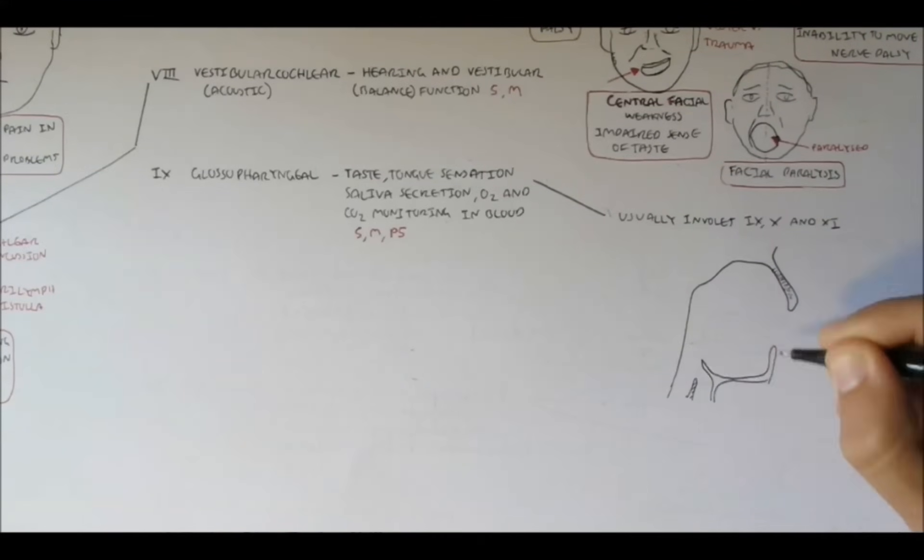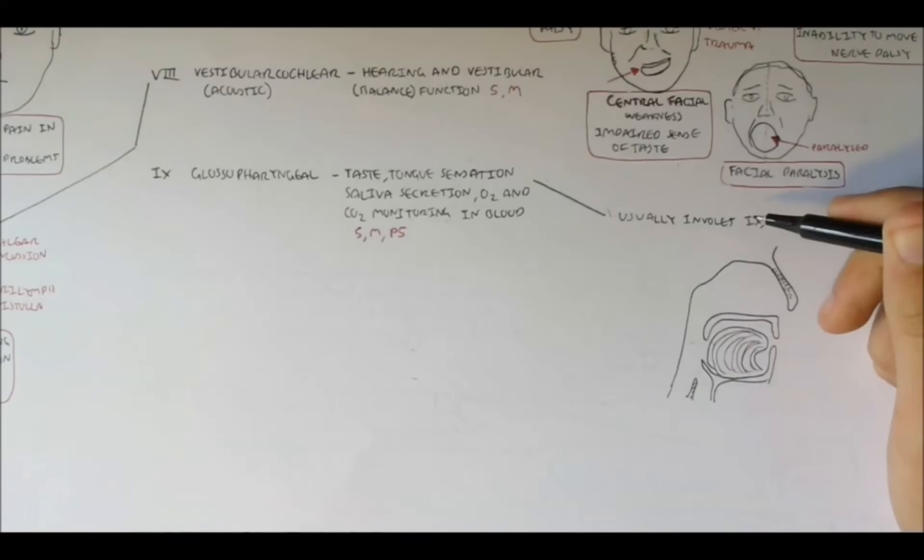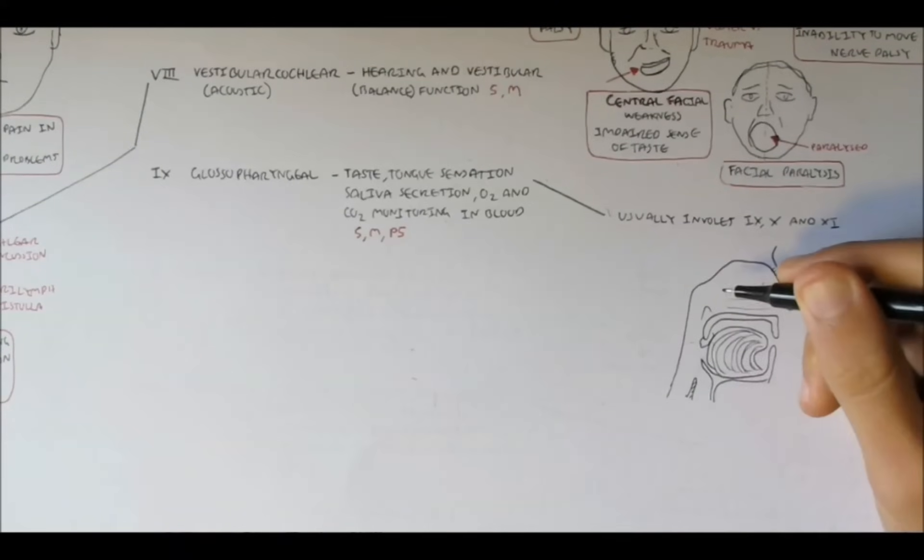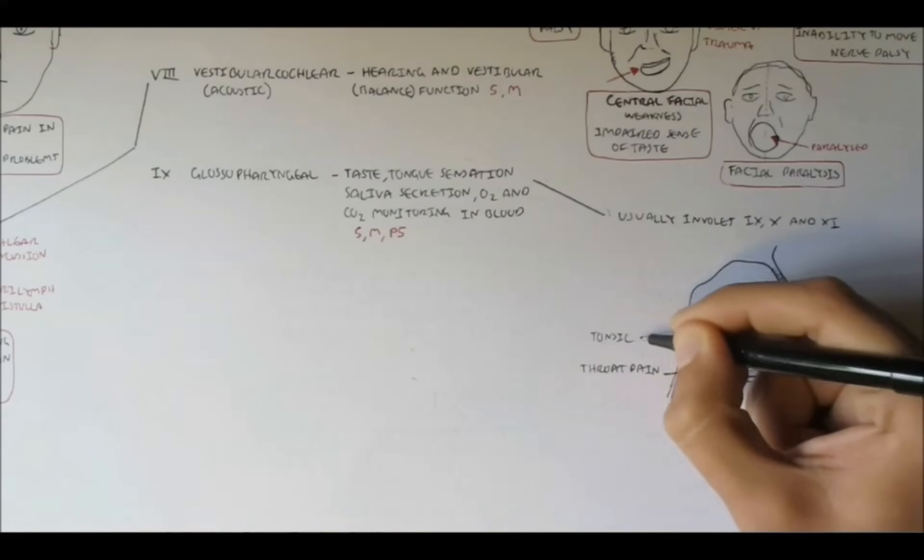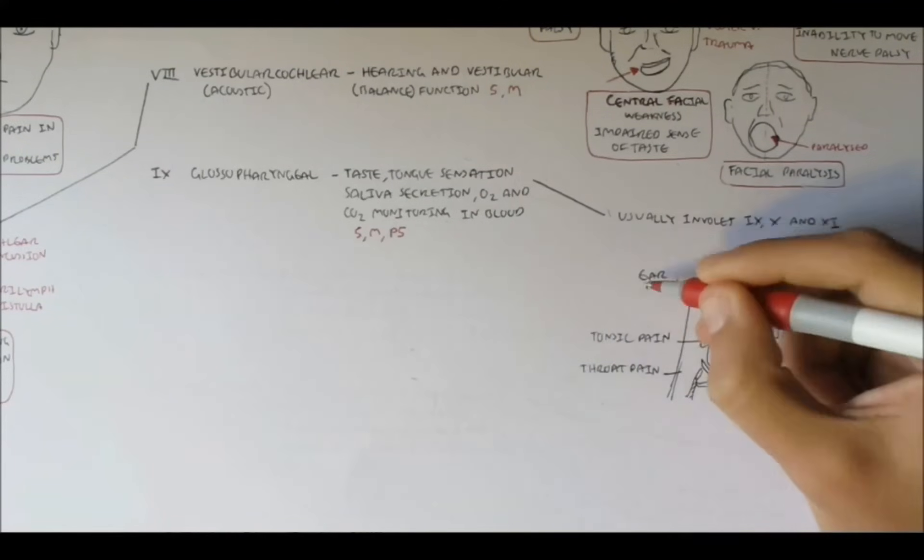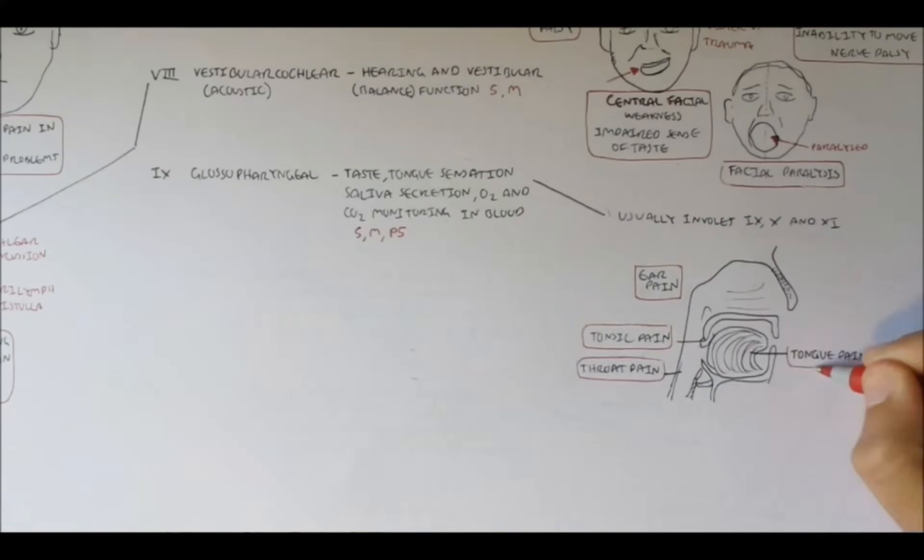So here is a section of the mouth. Damage to the glossopharyngeal nerve explicitly can cause pain in the tongue, can cause throat pain, tonsil pain, and even ear pain. And the causes for this can be from compression of a nerve by surrounding blood vessel in the brain.